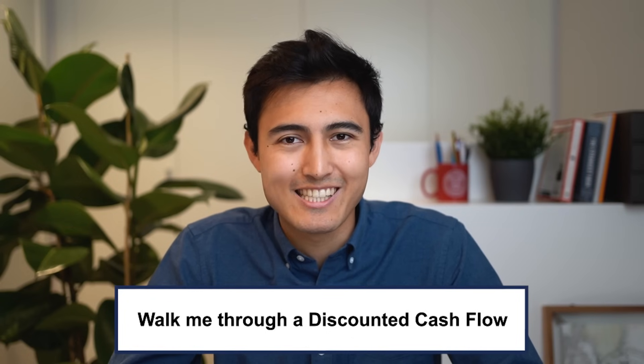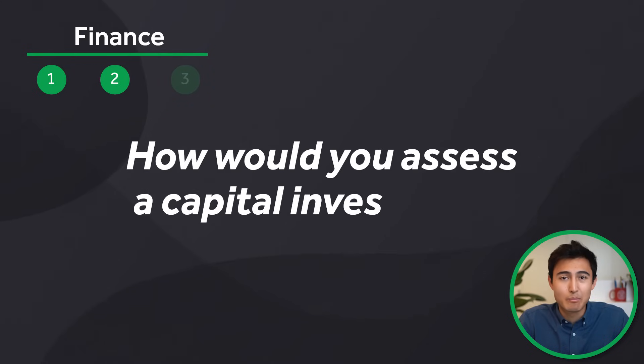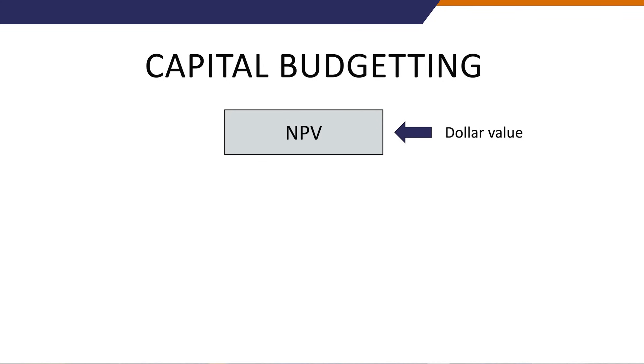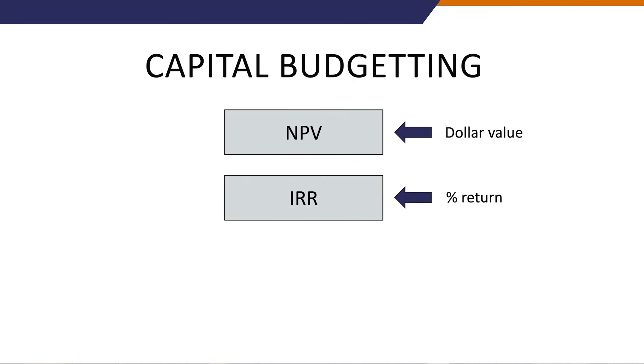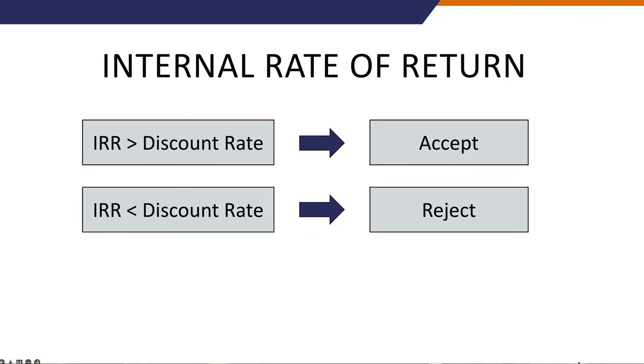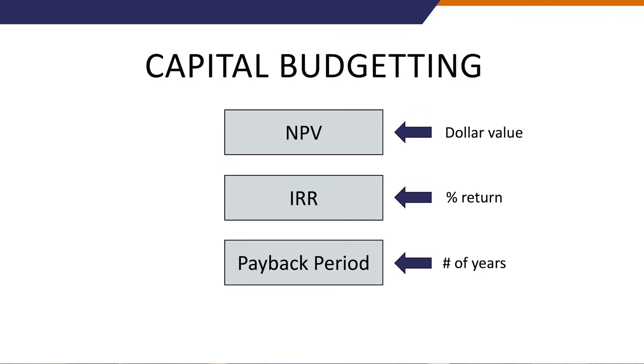A common follow-up is: walk me through a DCF — there's a separate video on that. The second finance question is how would you assess a capital investment? This is common in financial planning and analysis roles when deciding whether to invest in a new factory or store. There are three main methods: NPV (net present value) — if greater than zero, you typically accept the project; IRR (internal rate of return) — if greater than the discount rate, you accept it; and the payback period — the number of years to recover the investment, which varies by company.